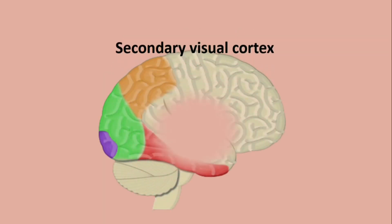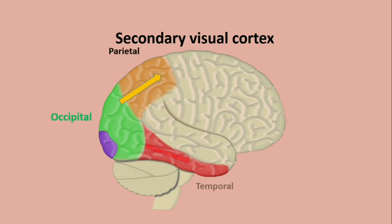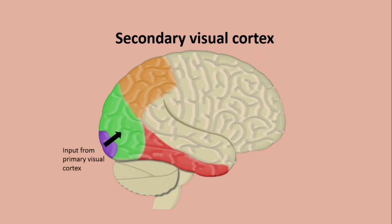The secondary visual cortex, or visual association area, is located primarily in the occipital lobe and extends to the parietal and temporal lobes. It receives information from the primary visual cortex as well as from the thalamus.